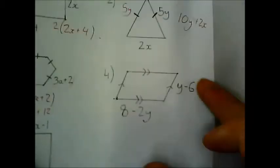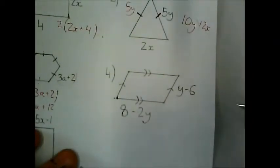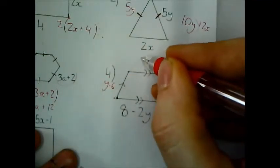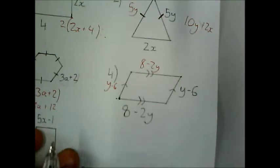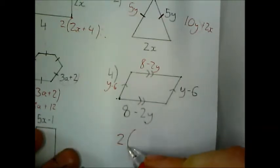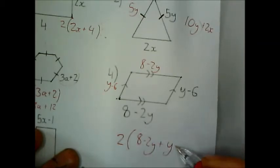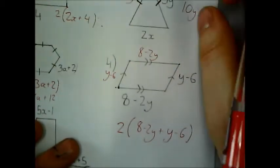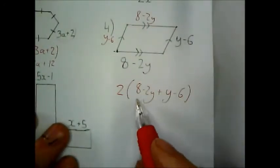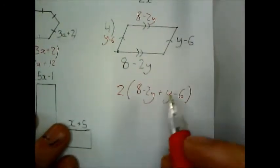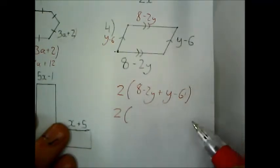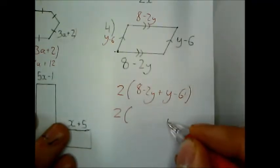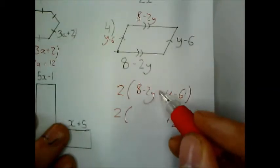OK. Question 4. I've got a parallelogram. So I'm going to have y minus 6 here. And 8 minus 2y here. And I can do just like I did for the rectangle. So I have 2 lots of 8 minus 2y. Add y minus 6. OK. And inside my bracket I can also collect like terms. So it's going to be 2 lots of an 8 and a negative 6. Is going to give me a positive 2.